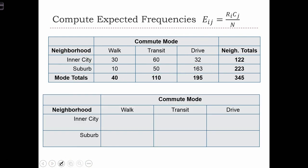So let's compute the test. The first thing that we need to do is compute the expected frequencies. So in our first example, we are going to have r1, which is 122, times 40, divided by n, 345. So we took row 1 times c1 divided by n. That equals 14.14.